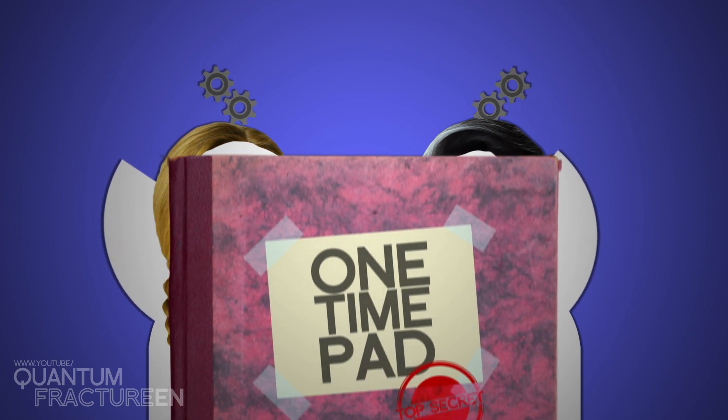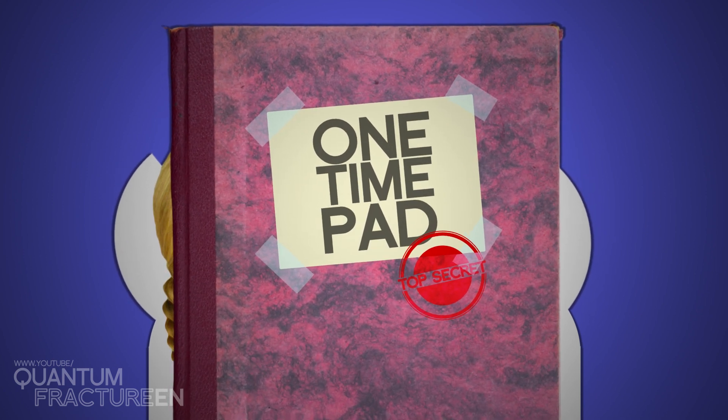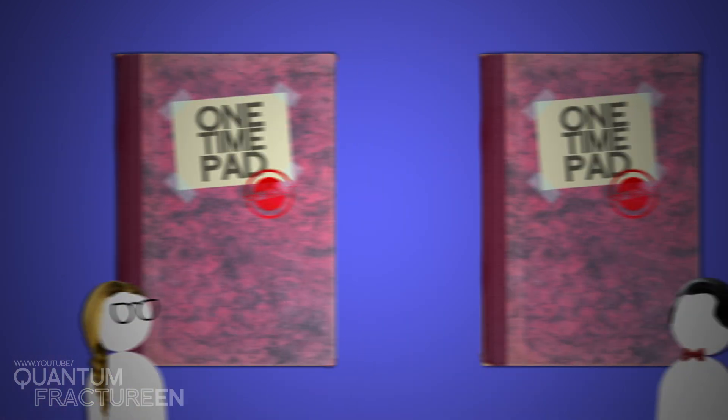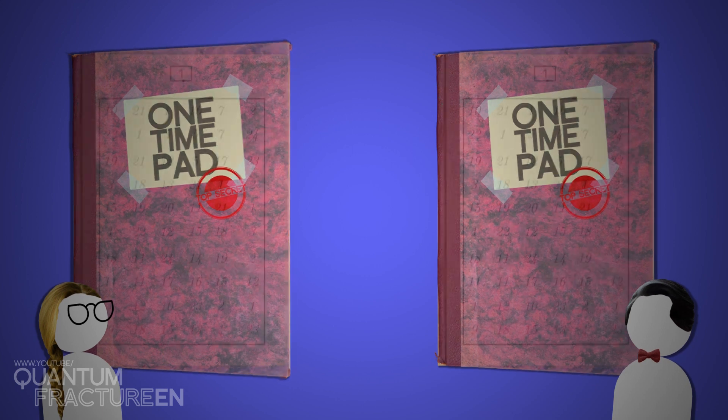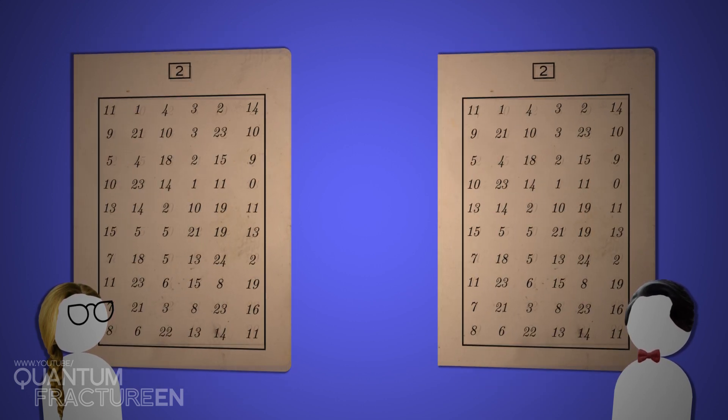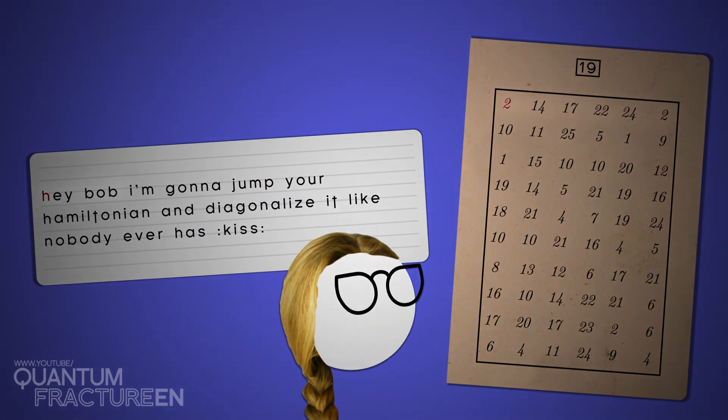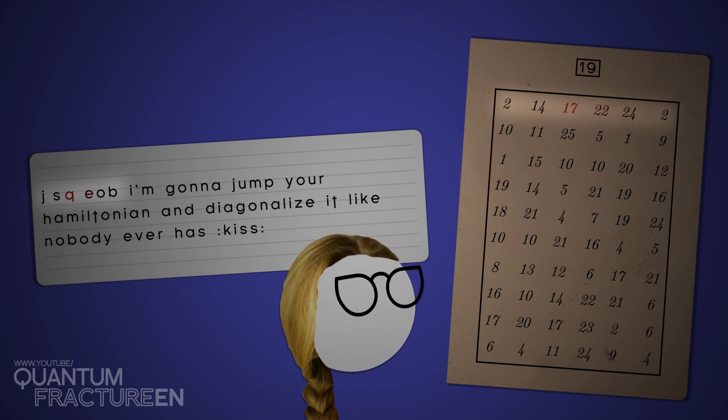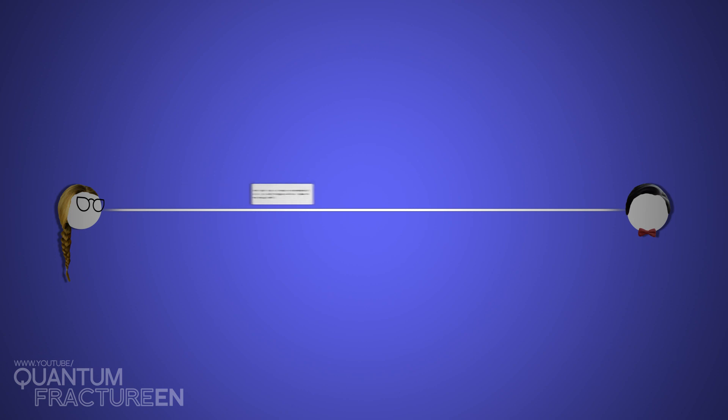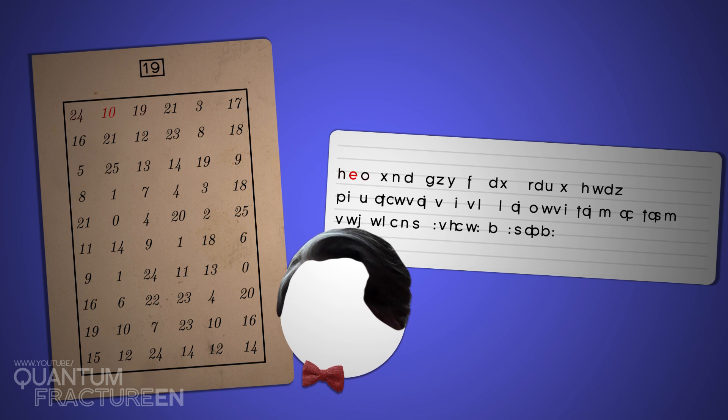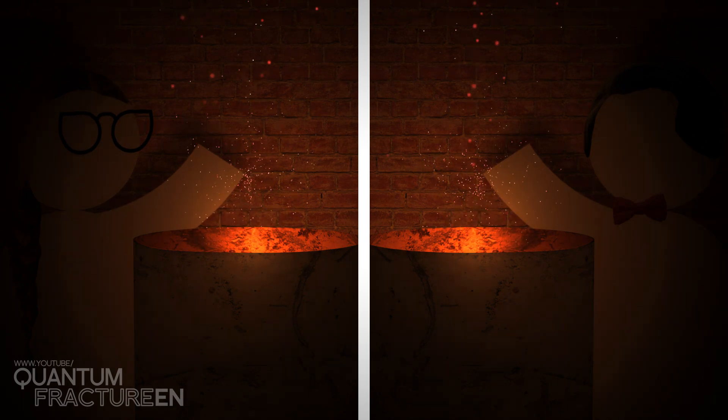Alice does some research and finds an anti-espionage method that looks pretty foolproof called One Time Pad Encryption. It works like this. She and Bob have two identical notepads where each page is filled with totally random numbers. A book of keys. To encrypt the message, Alice selects a page and shifts each letter in her message the number of times indicated on that page until she reaches the end. Alice then sends the encrypted message to Bob and he just has to use the same page to shift the text back in the opposite direction and decrypt it. When they're done, Alice and Bob burn that page. It's only good for one use.